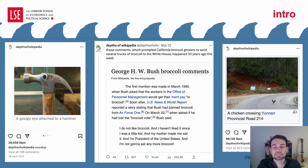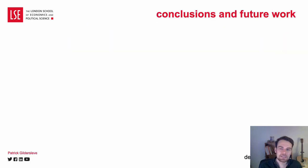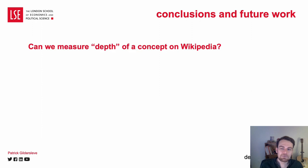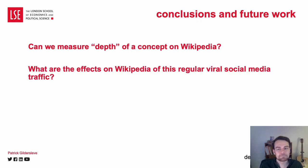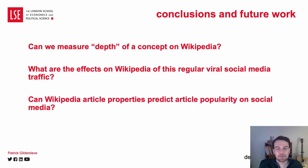By combining data from different sources, it can be an interesting natural experiment on cross-platform attention. Our motivating questions are: Can we measure depth of a concept on Wikipedia? What are the effects on Wikipedia of this regular viral social media traffic? And can Wikipedia article properties predict article popularity on social media?